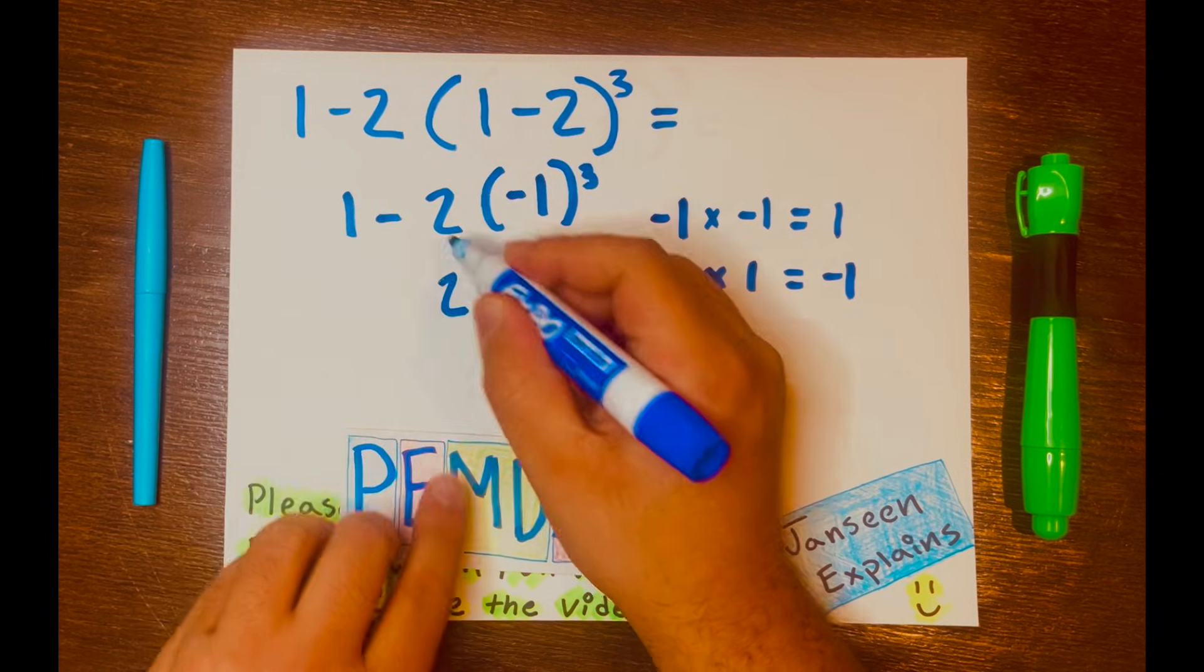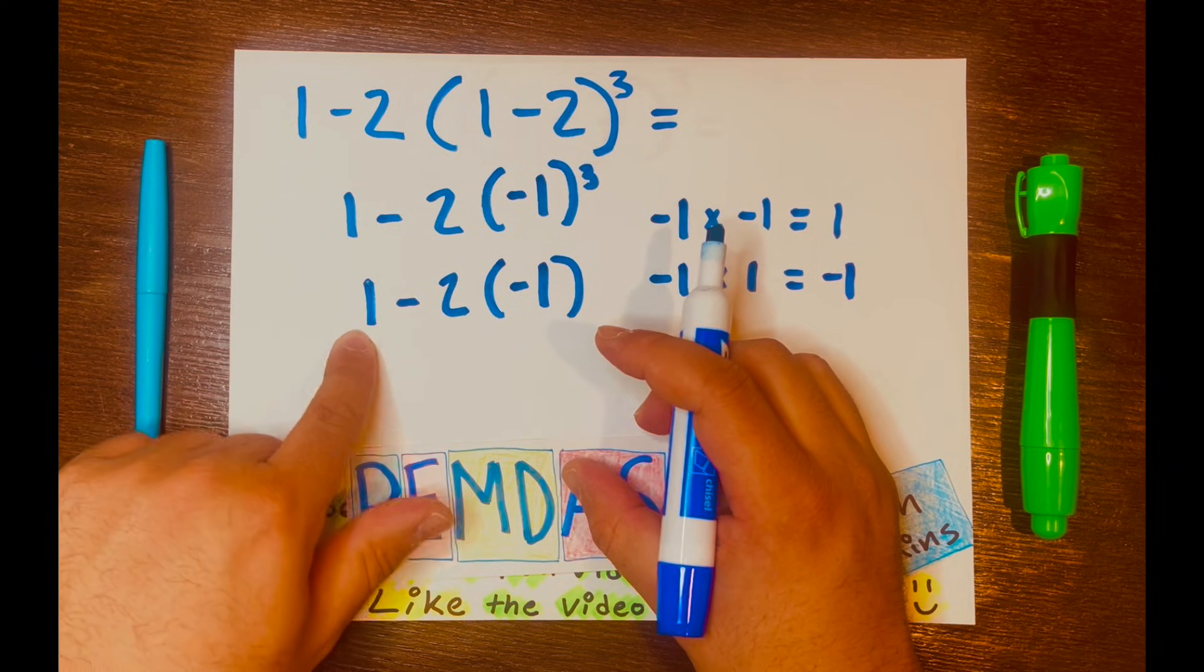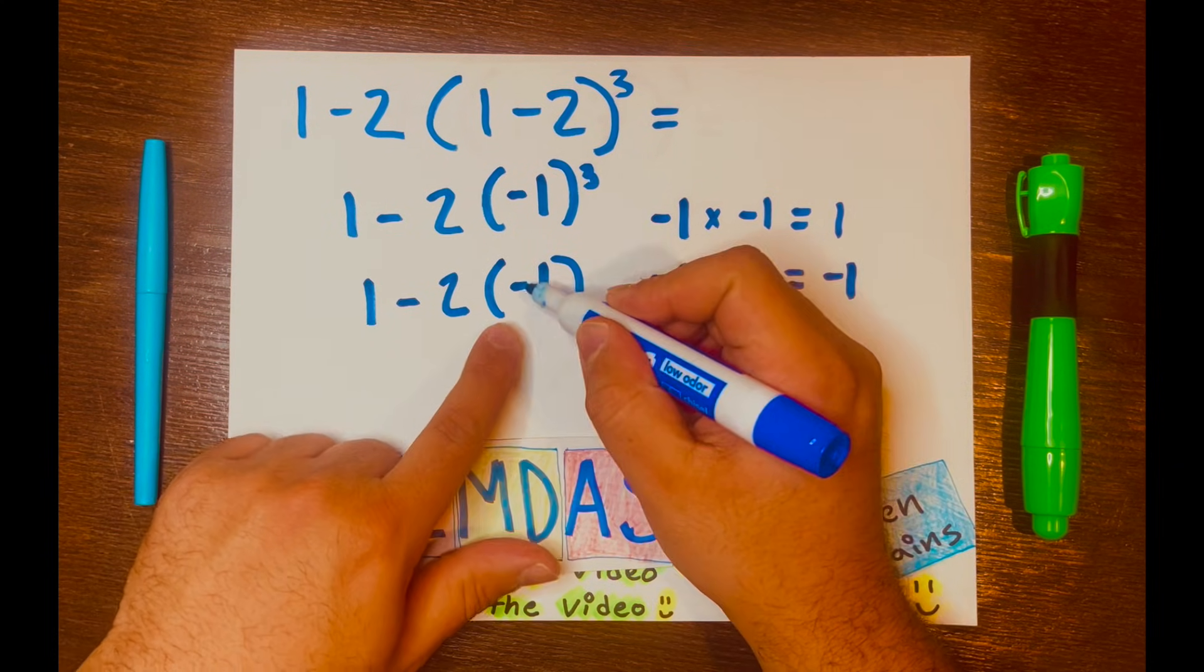Bring down the 2, the subtraction symbol down, and the 1 down. Now we have 1 minus 2 times negative 1.